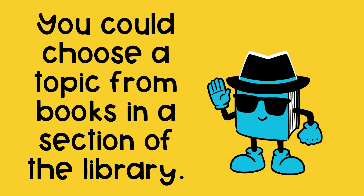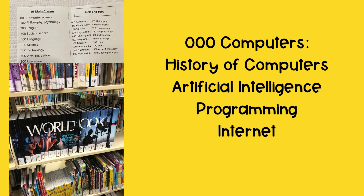You can also choose a topic from books in a section of the library. This is the 000 section. I can find books about the history of computers, artificial intelligence, programming, and the internet. One of these could be my topic for research.